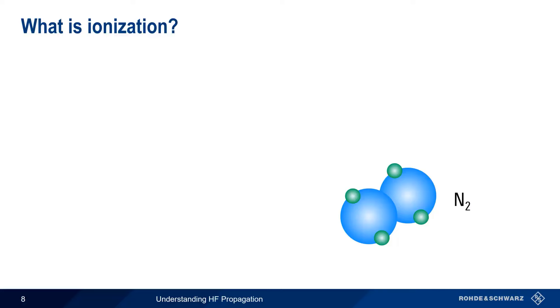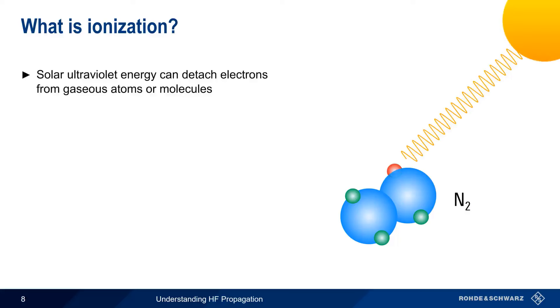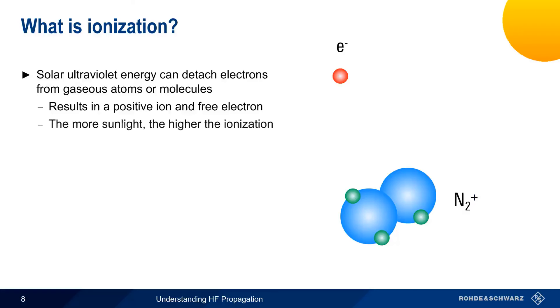In order to understand SkyWave propagation, we should start by explaining how ionization occurs in the Earth's atmosphere. When ultraviolet energy or radiation from the Sun strikes gas atoms or molecules in the atmosphere, this energy can cause electrons to become detached. The result is a positive ion, and more importantly, a free electron. The Earth's magnetic field keeps these free electrons roughly in place. The level of ionization, and the number of free electrons, increases as the amount of sunlight striking a given part of the atmosphere increases.